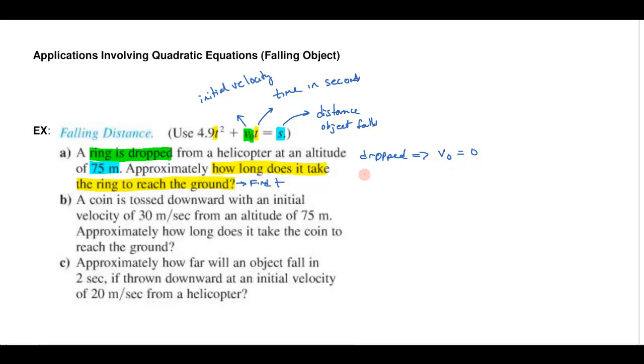So what I have is this formula. I've got 4.9t² plus zero times T equals 75. So all I really had to do is read very carefully and plug the numbers into the formula and then I can solve this equation.